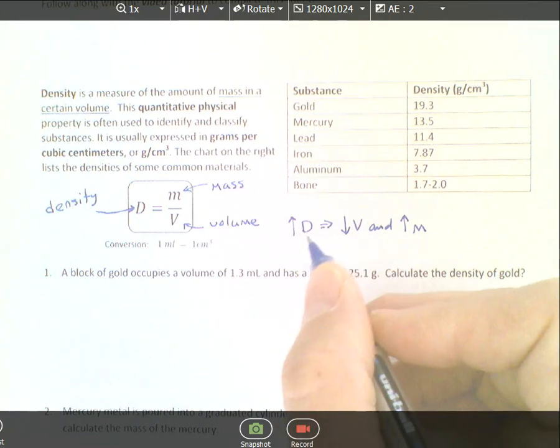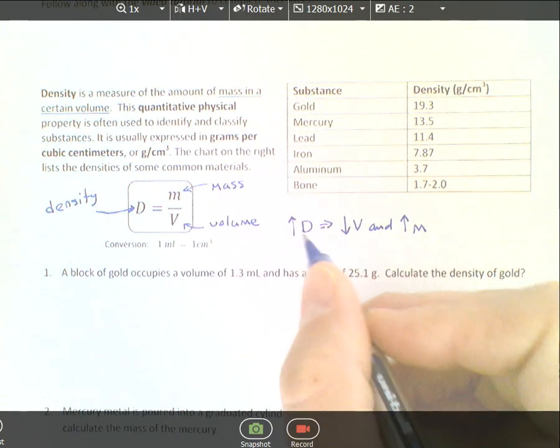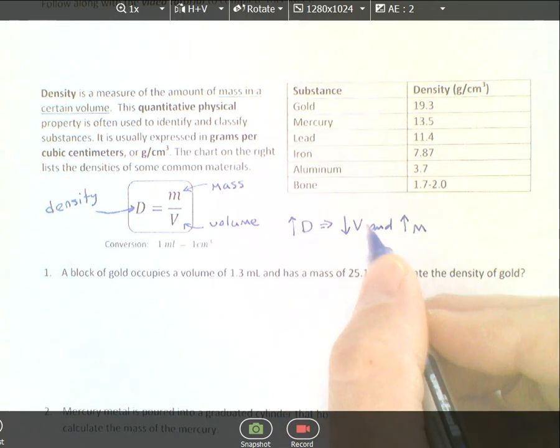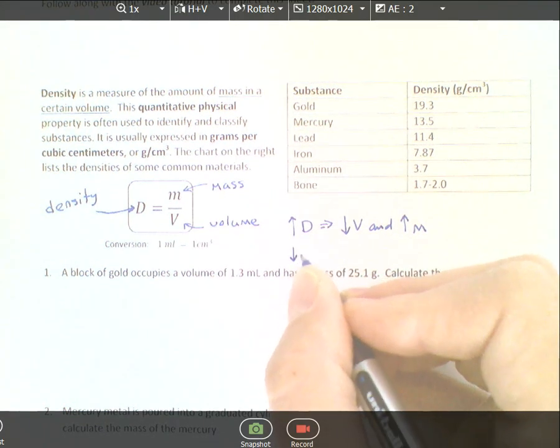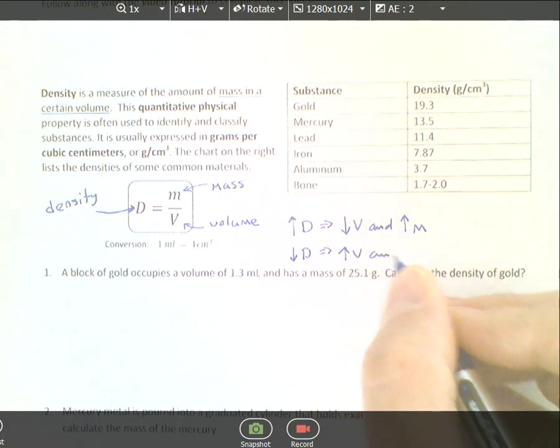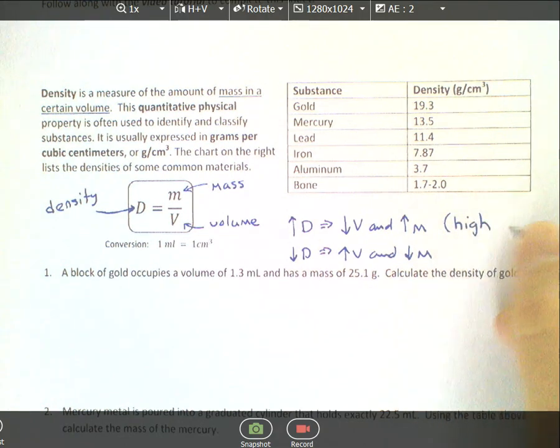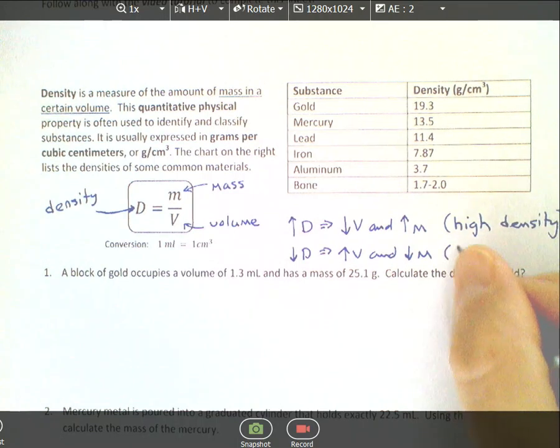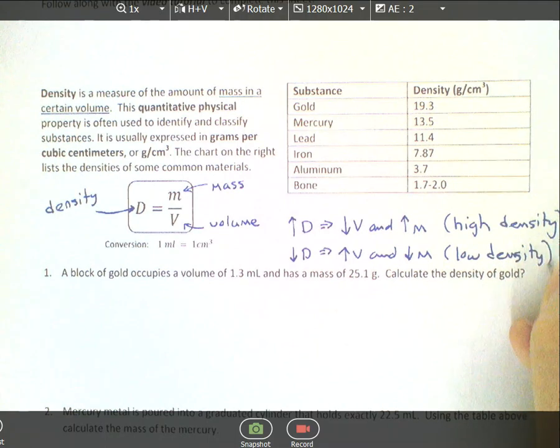To get high density, decrease volume and increase mass. To get low density, increase volume and decrease mass. So this is high density, and this is low density.